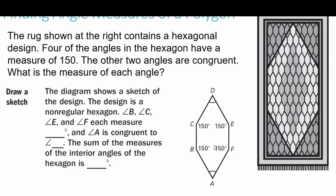Example 3: finding angle measures of a polygon. A rug contains a hexagonal design. Four of the angles in the hexagon measure 150 degrees, and the other two angles are congruent. We draw a sketch showing a non-regular hexagon where angles B, C, E, and F each measure 150 degrees, and angle A is congruent to angle D. Since this is a hexagon, the sum of interior angles is (6 − 2) × 180 = 4 × 180 = 720 degrees.